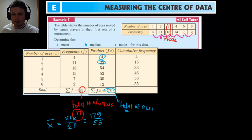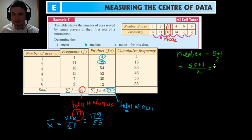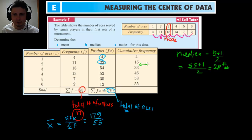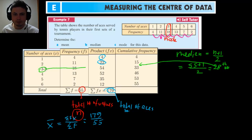To find the median, we use median = (n + 1) / 2. Our n is 55, so the median equals (55 + 1) / 2 = 28. So the 28th data value is our median. The cumulative frequency shows numbers in order — the 28th number falls between cumulative values 15 and 33. This means it corresponds to 3, so the median must be 3.